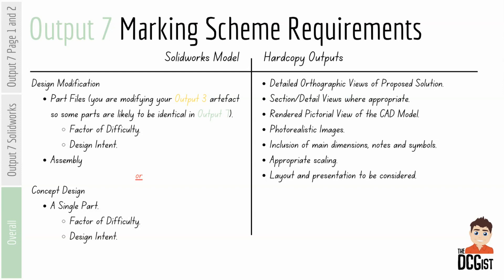Looking at the marking scheme requirements then, the main ones are with the hard copy outputs. So the different views that you need through your detailed orthographic, your sectional and detailed views, your render pictorial views, your photorealistic images. This is a change from output 9 in that the photorealistic images used to go into a page on their own, whereas now because this is two pages long, the photorealistic ones are going to be put into the same sheets as the working drawings. You want the inclusion of the main dimensions, notes and symbols, appropriate scaling, and then your layout and presentation to be considered.